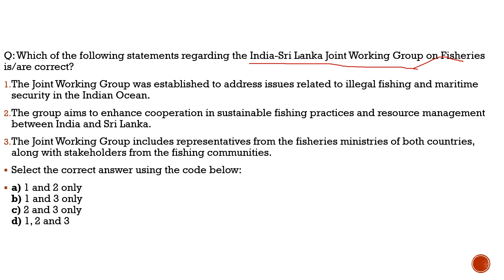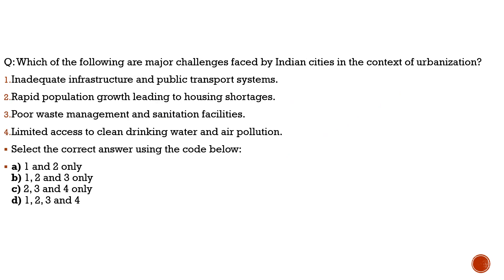The reason we brought this question is the sixth meeting of the India-Sri Lanka Joint Working Group on Fisheries was recently held. Statement 1: The joint working group was established to address issues related to illegal fishing and maritime security in the Indian Ocean — 100% correct. Statement 2: The group aims to enhance cooperation in sustainable fishing practices and resource management between India and Sri Lanka — correct. Statement 3: The joint working group includes representatives from fishery ministries of both countries along with stakeholders from fishing communities — 100% correct. All three statements are correct — option D.